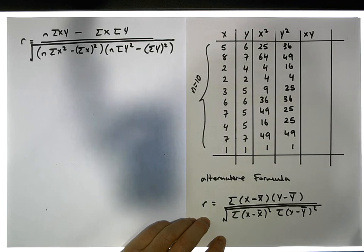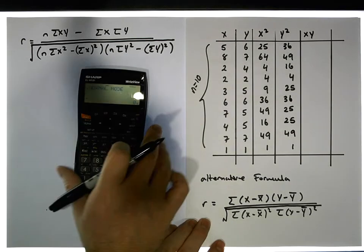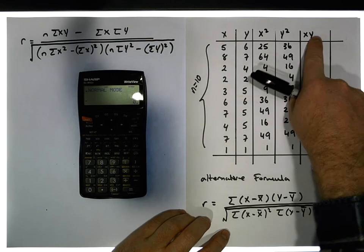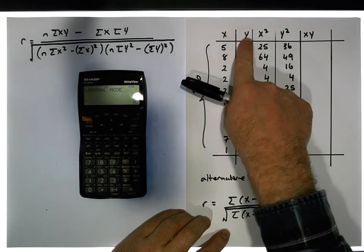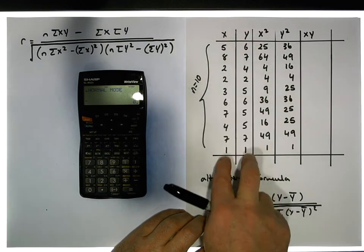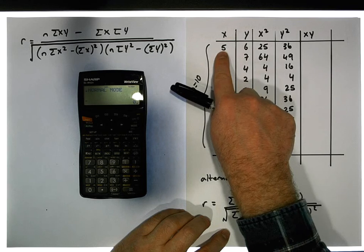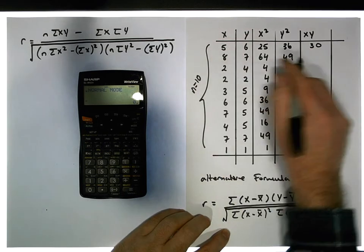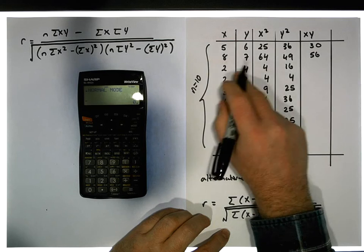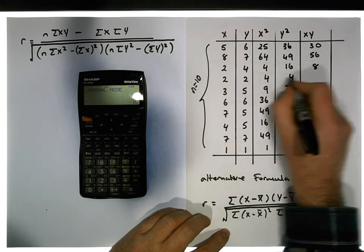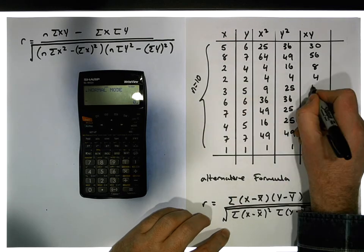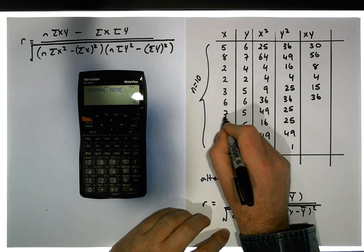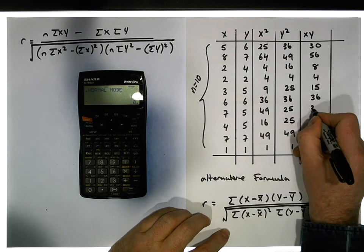I'll need my calculator in a moment to sum up these columns and make sure I'm not making any mistakes. We need the x times y cross products — the product of the paired values. Five times six is 30. Eight times seven is 56. Two times four is 8. Two times two is 4. Three times five is 15. Six times six is 36. Seven times five is 35. Four times five is 20.